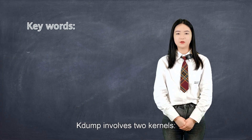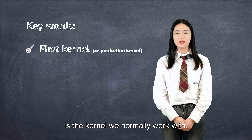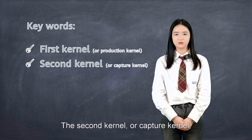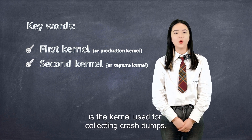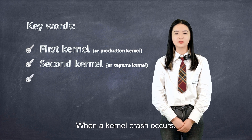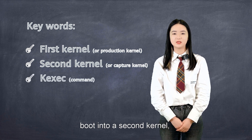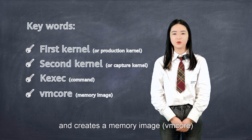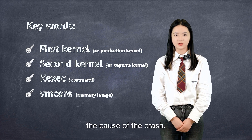KDump involves two kernels. The first kernel, or production kernel, is the kernel we normally work with. The second kernel, or capture kernel, is the kernel used for collecting crash dumps. When a kernel crash occurs, KDump boots into the second kernel and creates the memory image — vmcore — that can help us determine the cause of the crash.